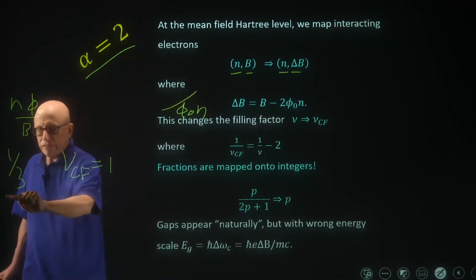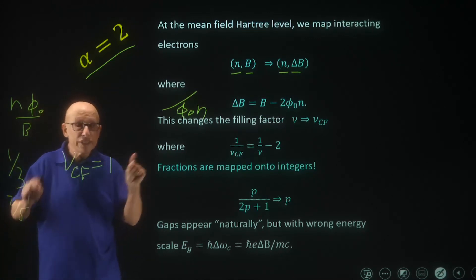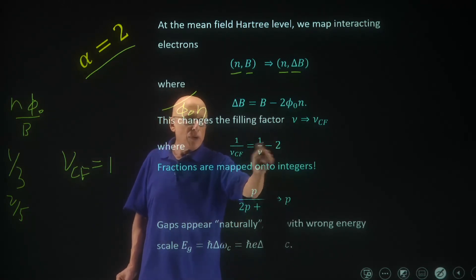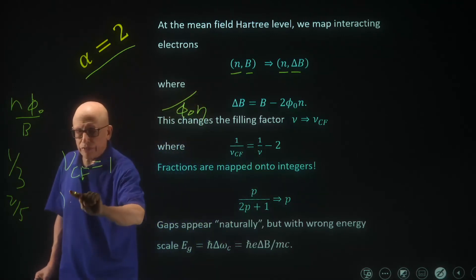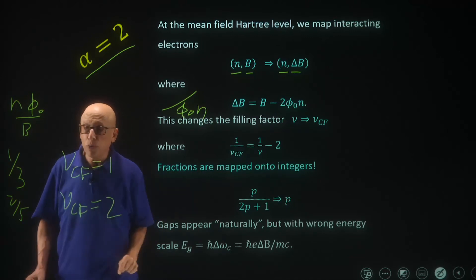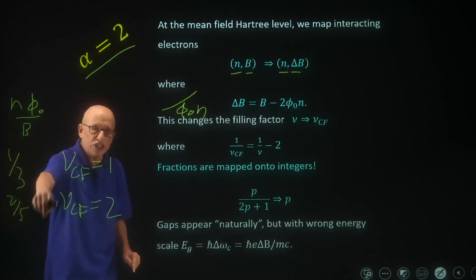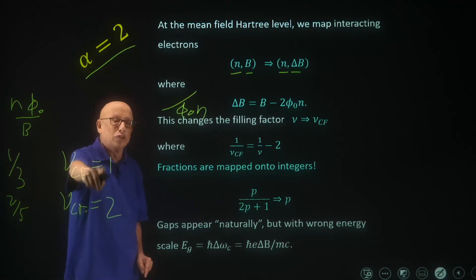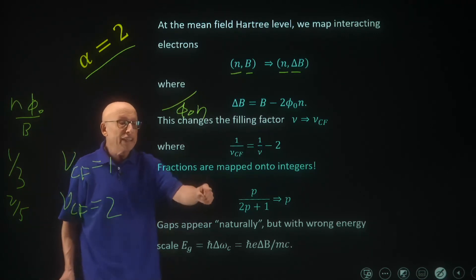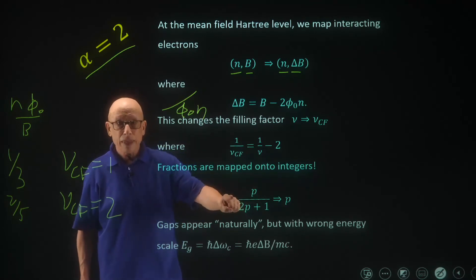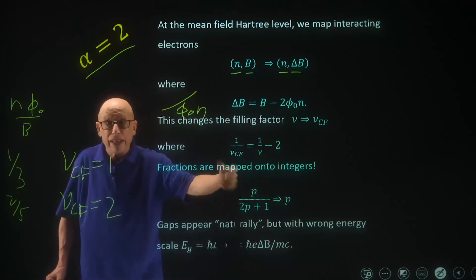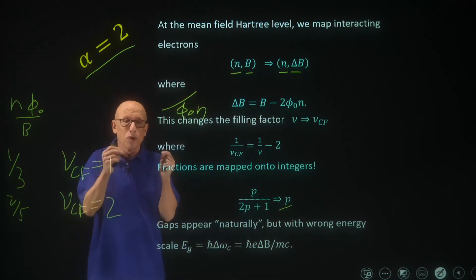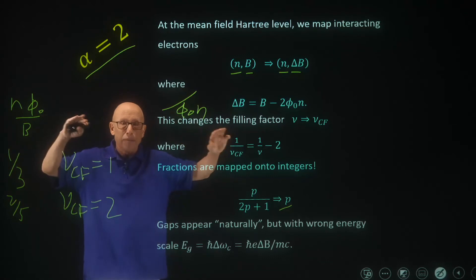For nu equals two over five: five over two minus two leaves one-half, and inverting gives composite fermion filling factor equals two. So we map fractional values of the electron filling factor to integer values of the composite fermion filling factor. The entire series p over (2p+1) — which is what you mostly see in experiments — maps onto p, meaning integer quantum Hall effect for composite fermions.